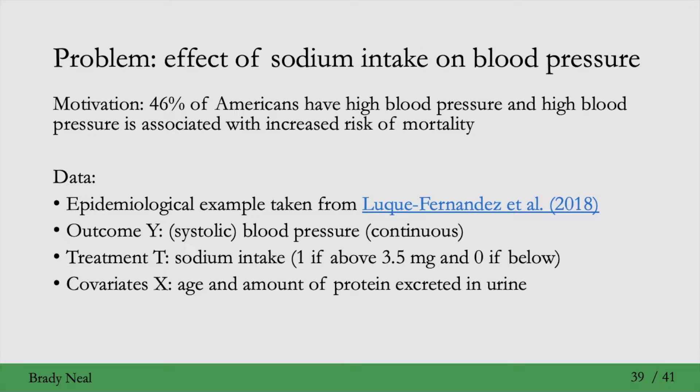The covariates in this example are two. The first is age, and the second is the amount of protein excreted in urine, which happens to be relevant for this problem.